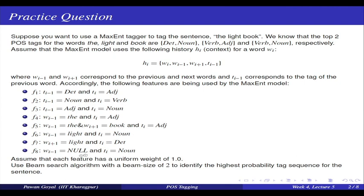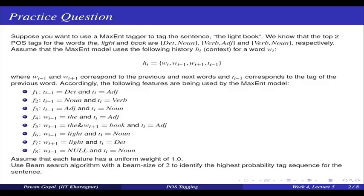The task is to use the beam search algorithm with a beam size of two. At any given point you will keep only the top two highest-probability tag sequences and forget everything else. At any point you know the top two tag sequences up to that position. Overall, you need to find the highest-probability tag sequence for the sentence 'the light book'.